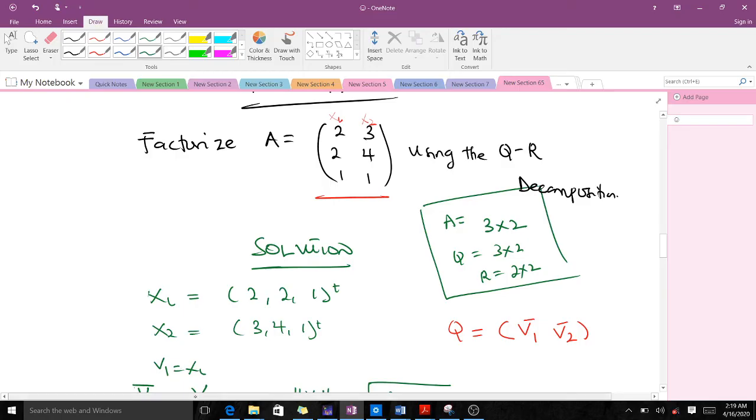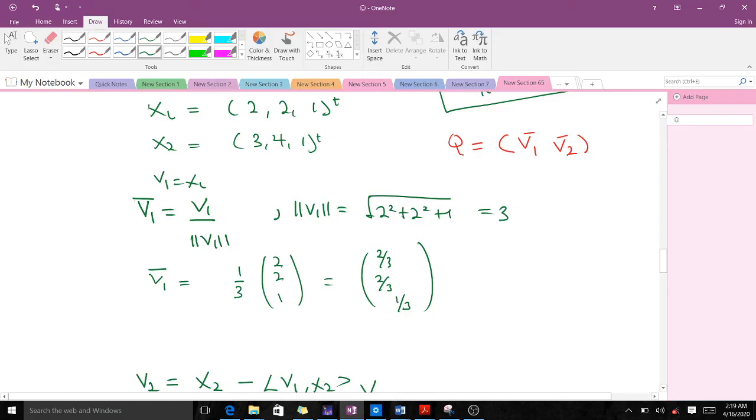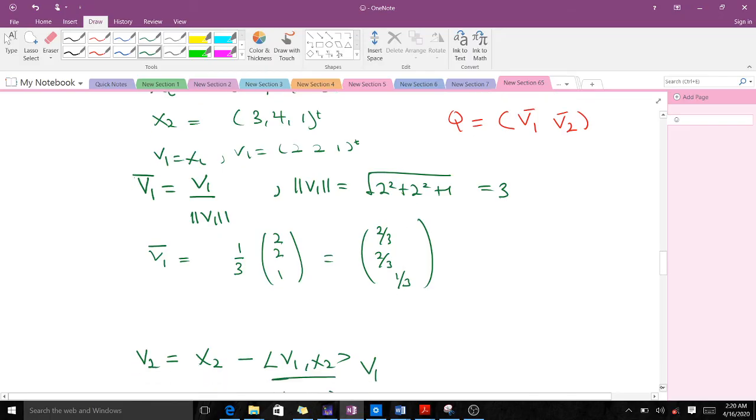We said V1 is equal to X1 from the Gram-Schmidt orthogonalization process. So to find our orthogonal matrix, we need V1 bar and V2 bar. Our V1 is equal to X1, so V1 is equal to (2, 2, 1) transpose. X1 bar is equal to V1 over the norm of V1. When you find the norm of V1, you have 2 squared plus 2 squared plus 1 squared to the power of half, which gives us 3. So our V1 bar will be equal to 1 over 3 times this particular column vector.